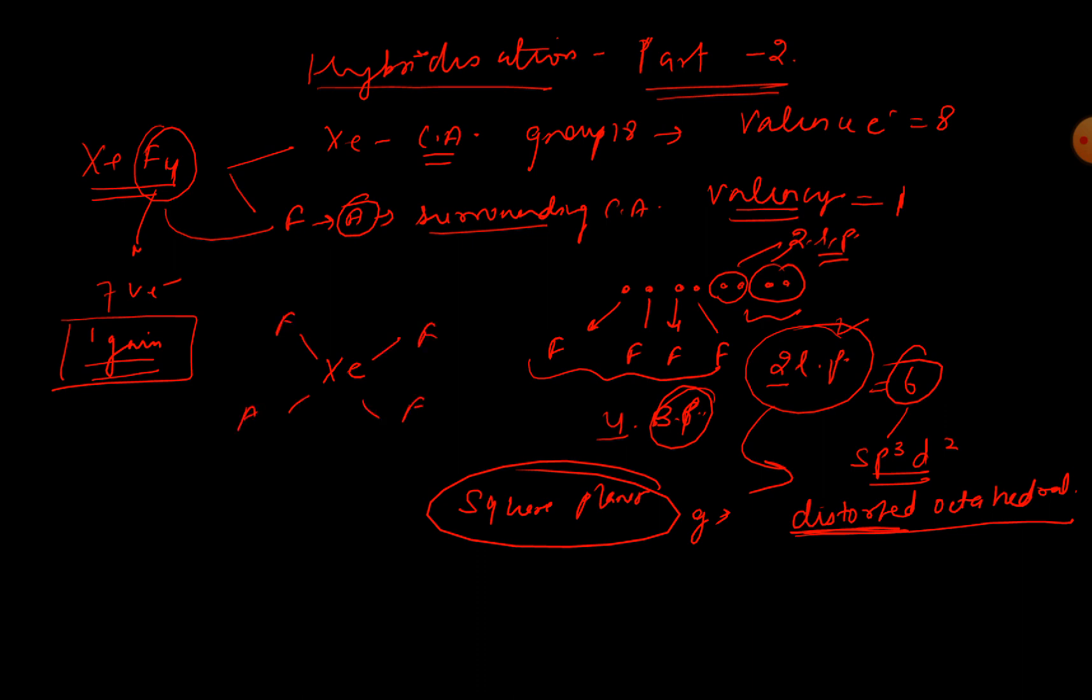The shape is going to be square planar, where four fluorine atoms are at the corner of the square and two lone pairs, one above the plane of the molecule and one below like this. So this is square planar shape.